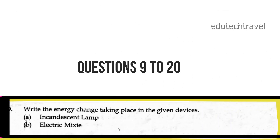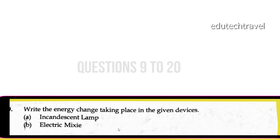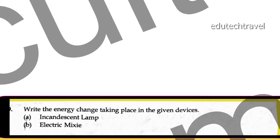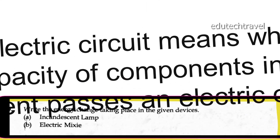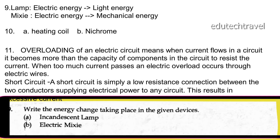Next question: what energy change takes place in the given devices? In a lamp, electrical energy is converted to light energy. In an electric mixer, electrical energy is converted to mechanical energy.